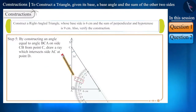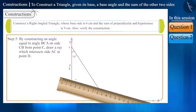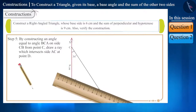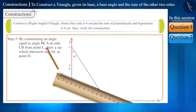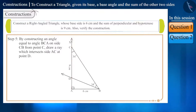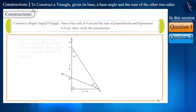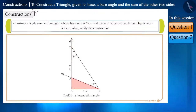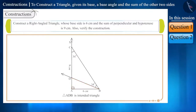Now, on side BC from point B, by constructing an angle equal to 34 degrees, draw a line which intersects side AC at point D. In the figure, triangle ADB is that right triangle which we need to construct.